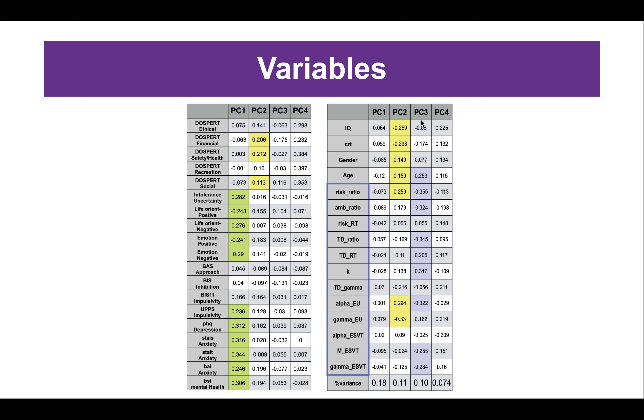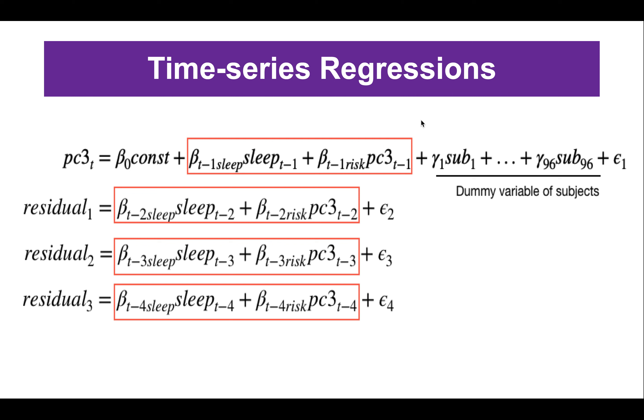Now we have the risk component and activity variables. We performed time series regressions to check how weekly fluctuation in the risk component correlated with the pattern of subjects' weekly activities. We would like to see how daily activities one week ago, two weeks ago, or even three to four weeks ago can predict the current week risk component.